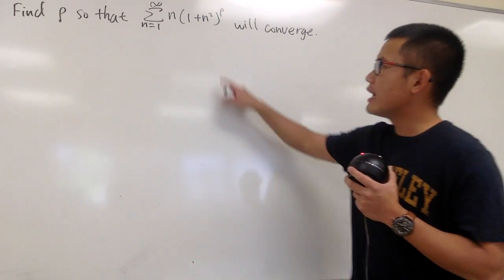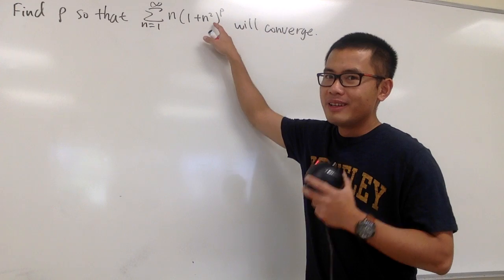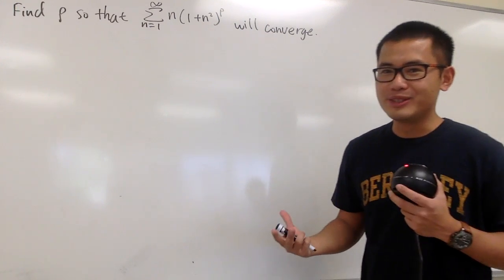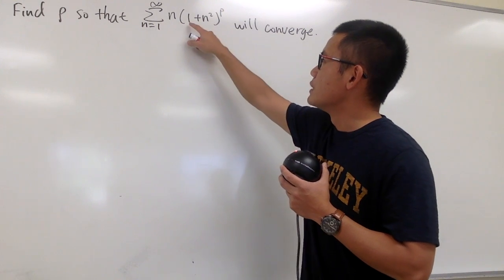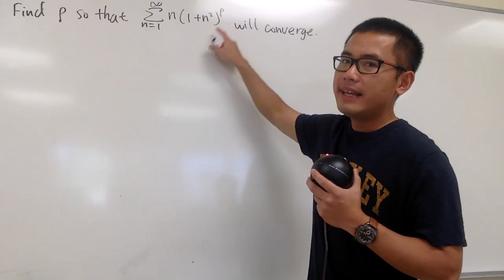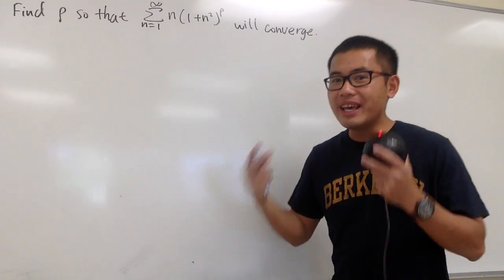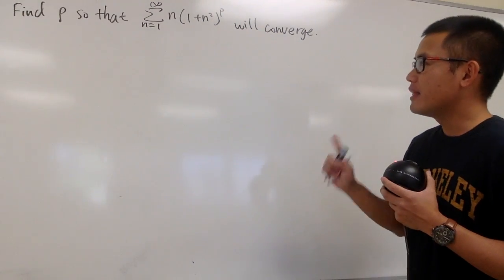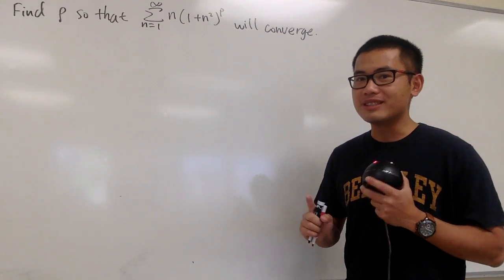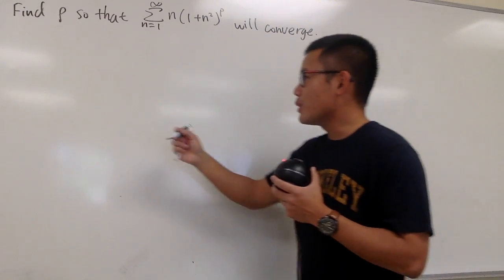I notice that this is somehow kind of like an integral situation. Because if you imagine, we have the integral of x times the parentheses with 1 plus x squared inside, and then raised to a power. We can take off that integral by doing u-substitution. So I think we can utilize the integral test to help us out.